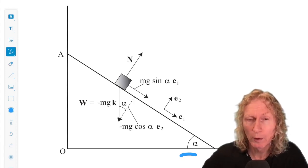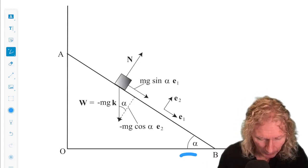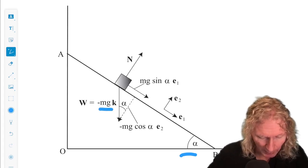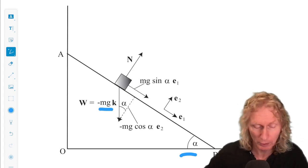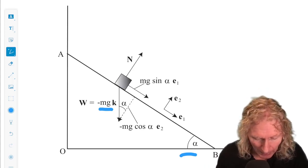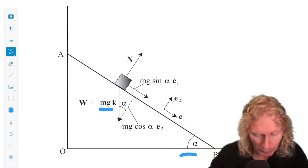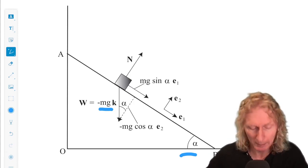The only force acting on the block is gravity minus mg k. We'll assume that the vertical direction is k. And then, in order to keep the block on the plane, we have a normal force normal to the plane, N.